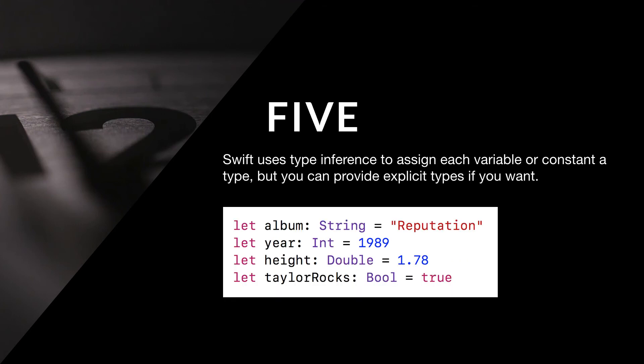And 5. Swift uses type inference to assign each variable or constant a type, but you can provide explicit types if you want.